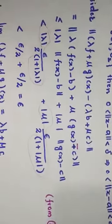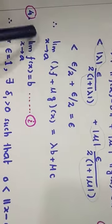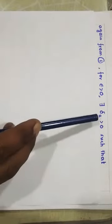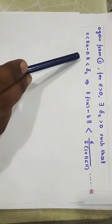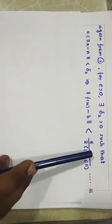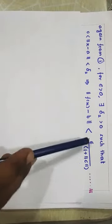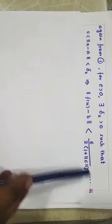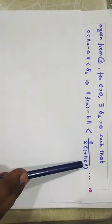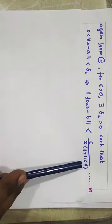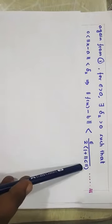Then, once again by definition, since limit of F of X is B, again by definition, for given epsilon there is some delta 2 positive such that whenever norm of X minus A is less than delta 2, then norm of F of X minus B is strictly less than epsilon upon 2 times 1 plus norm of C. This is epsilon upon some positive number, so definitely this is less than epsilon. This norm of C is the limit of the other function G of X — we have to remember this choice. So, epsilon upon 2 times 1 plus norm of C.